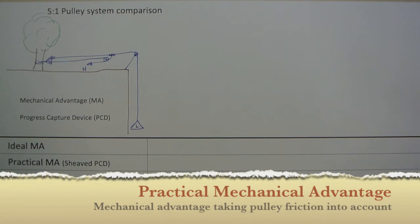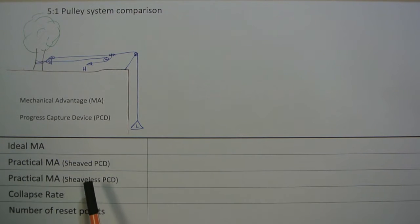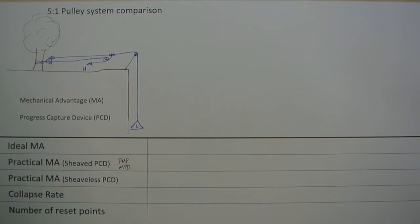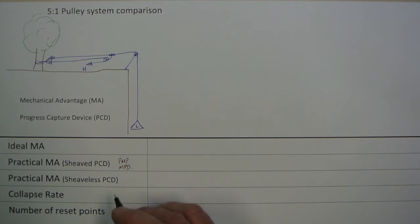The practical mechanical advantage — we've got two practical MAs. One with a sheaved progress capture device and another with a sheaveless progress capture device. An example of a sheaved progress capture device might be a Prusik winding pulley with a Prusik, or something like an MPD. A sheaveless progress capture device would typically be a descender or lowering device used as a progress capture — the best example being a Petzl ID.